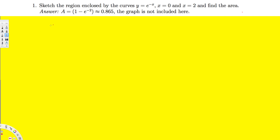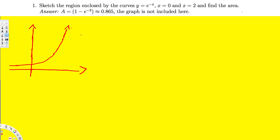Let's go ahead and graph this first. So here we have e^(-x), and the graph looks like this — it goes like this. The region we are interested in is from x = 0 to x = 2. If you draw a line at x = 2, this is the region we are interested in — this is the area we are going to find.